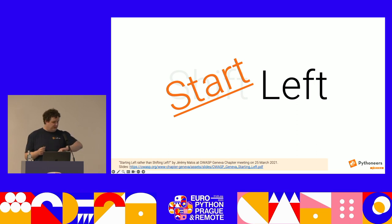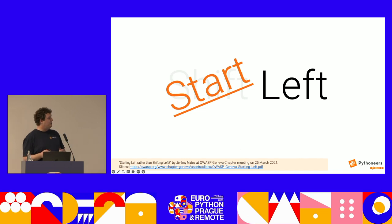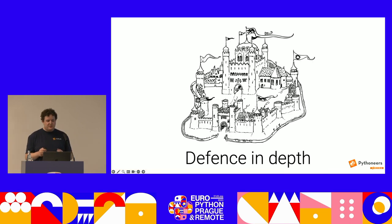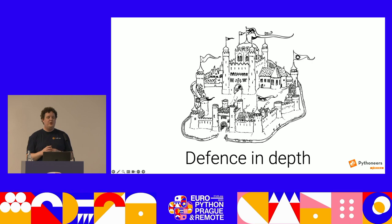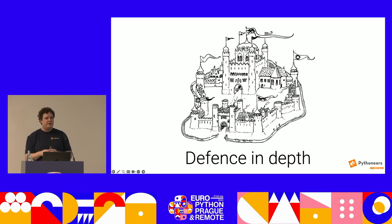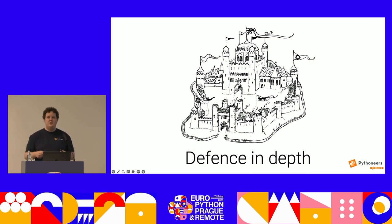Let me zoom in on the first security principle I want to show you today: defense in depth. It's typically illustrated with a castle. What this means is that if you want to do security well, you cannot rely on a single security measure. Here you have a castle — you have a moat, so if you want to get in, you first have to cross the moat, then get past the wall, and then you're in the inner courtyard. But all the treasures are in the actual castle, which is a fortification unto itself. There are guards everywhere, rooms are locked. You have multiple layers of security — this is what defense in depth means.